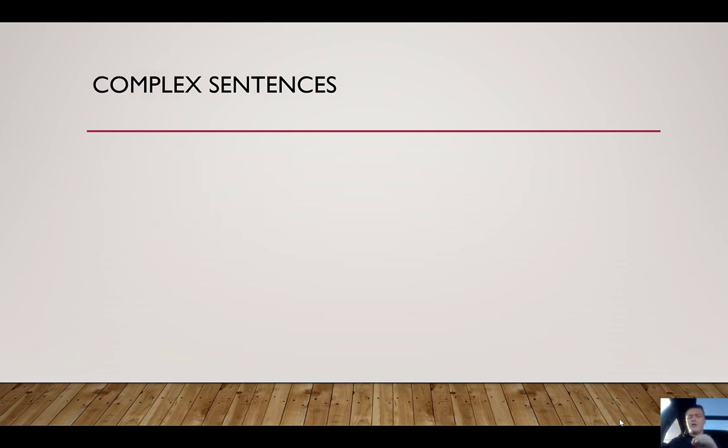What's the next one? Complex sentences. These have one independent clause. They also have a dependent clause. So a dependent clause is something that doesn't really make sense on its own. It's not a complete thought, and so it relies, it is dependent on what else is in the sentence. It is dependent on the independent clause to make sense.